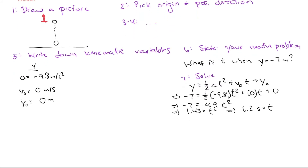I include a final step — step eight — which is to answer the question. It's important to make sure you are answering the question and not just writing down what you solved, as this helps you avoid mistakes where you need to use a calculation to finally answer the question. In our case it's simply the same value, so I write it down in a sentence: it takes 1.2 seconds to hit the ground.